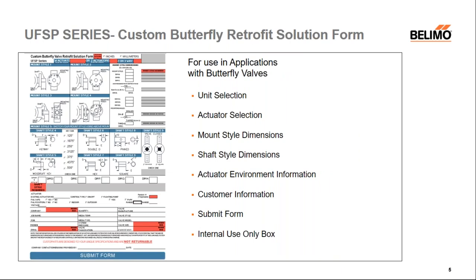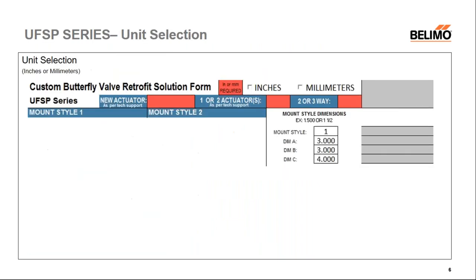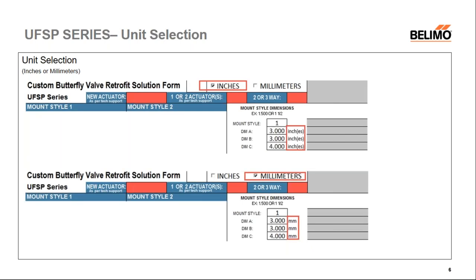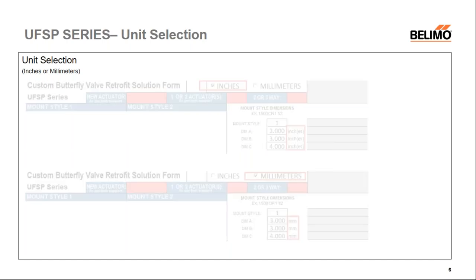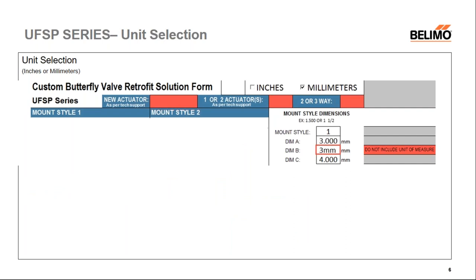The first form we're looking at is the UFSP form for butterfly valves, the one most often sent in since butterfly valves are most often retrofitted. The first thing you'll see is unit selection — inches or millimeters required is in red as soon as the form opens. Once inches or millimeters is selected, the unit fills in automatically throughout the form. If a unit of measurement is typed in with a dimension, you will get an error message saying do not include unit of measurement.